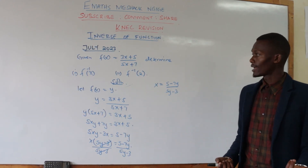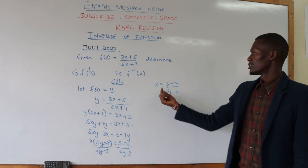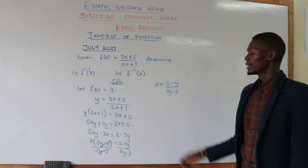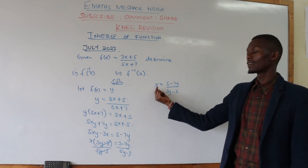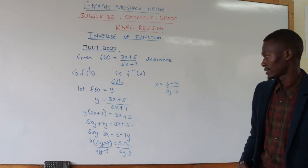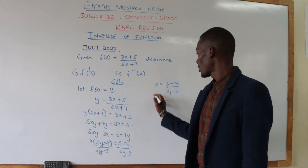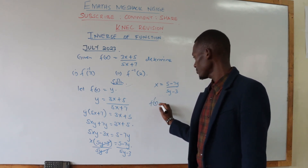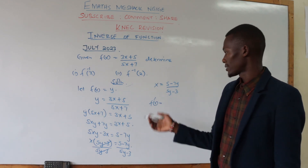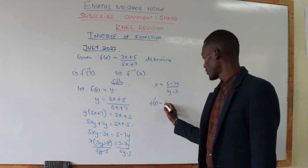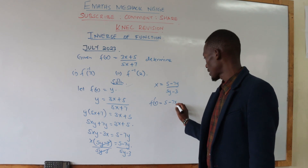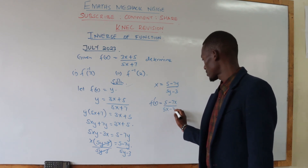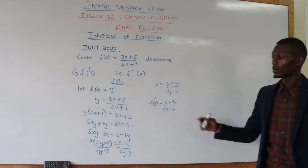Now the last step: to find the inverse of the function, we interchange x and y — wherever you have an x, replace it with y, and wherever you have a y, replace it with x. Therefore, our f inverse of x is given by 5 minus 7x, all over 5x minus 3. That is your inverse. Note this is f to the negative 1, not f prime.